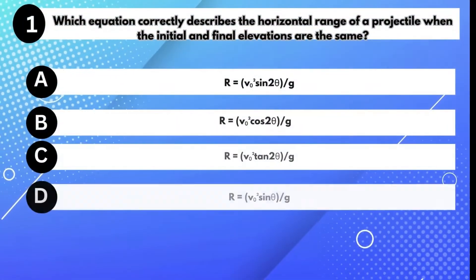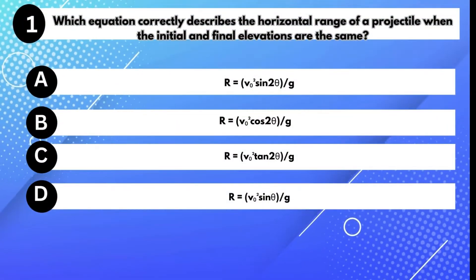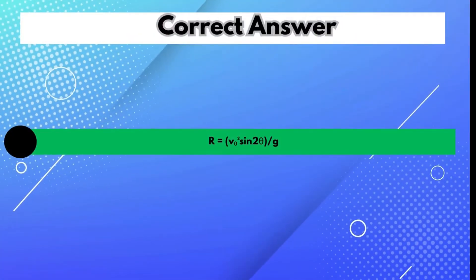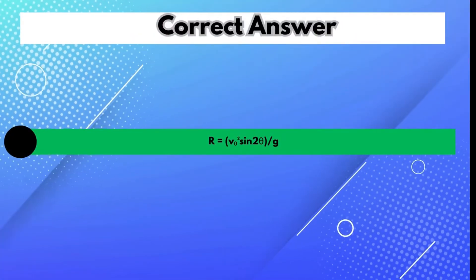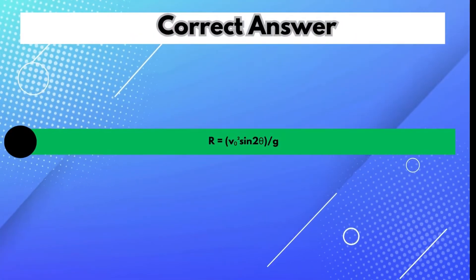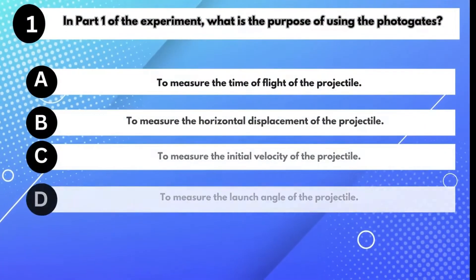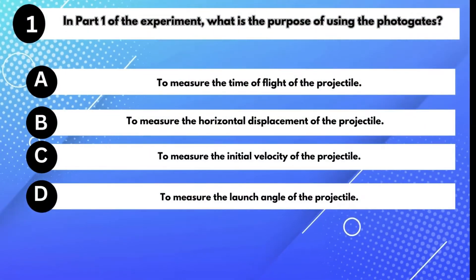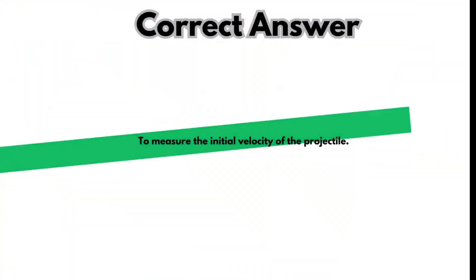Which equation correctly describes the horizontal range of a projectile when initial and final elevations are the same? Answer A: R equals V² sin(2θ) / G. In part 1 of the experiment, what is the purpose of using the photogates? Answer C: To measure the initial velocity of the projectile.